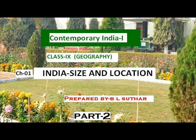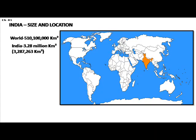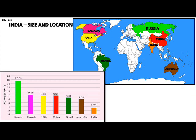Geography class 9, chapter 1: India size and location, part 2. The total surface area of the earth is 510 million square kilometers, out of which approximately 148 million square kilometers is land surface. The land area of India is 3.28 million square kilometers, that is 32,87,263 square kilometers, which occupies 2.4 percent of the total geographical area of the world. India is the seventh largest country in the world.